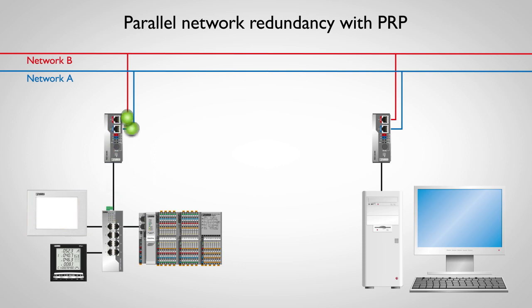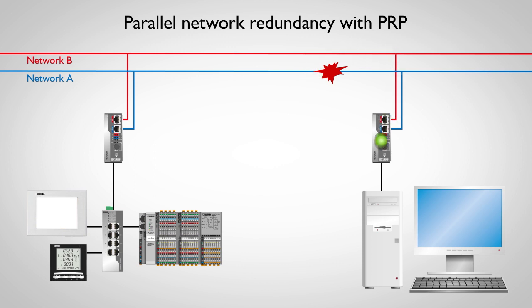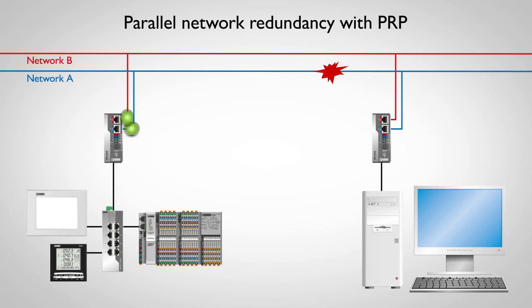The data package received first of all is used at the target device. In the event of a disturbance or interruption in a network, the data package reaches the recipient via the second network, without any delays caused by switchover time or reconfiguration time. Data traffic continues to run without interruption, thanks to bumpless redundancy.